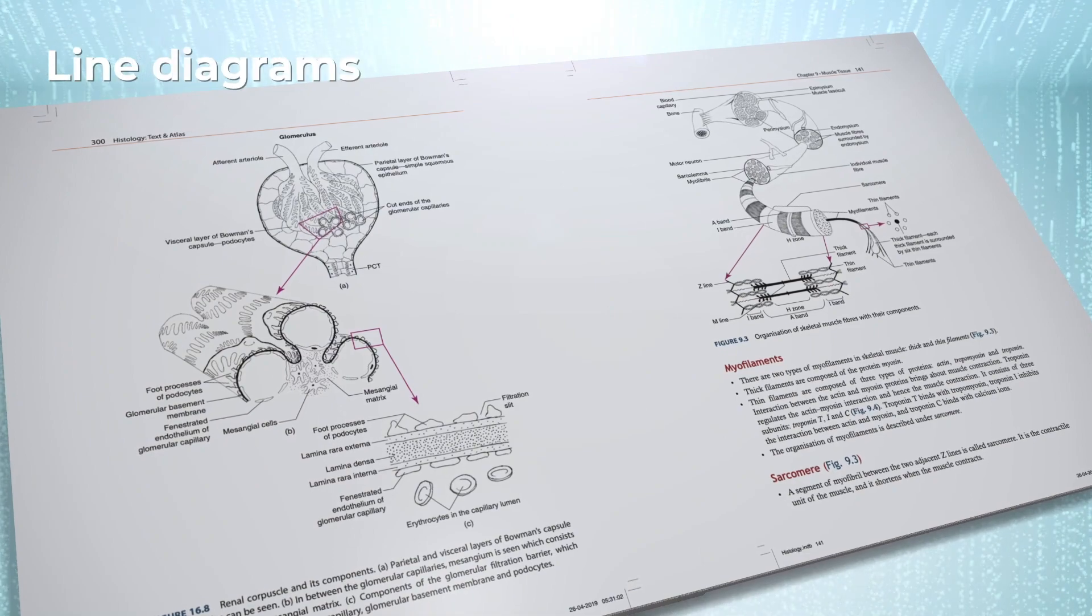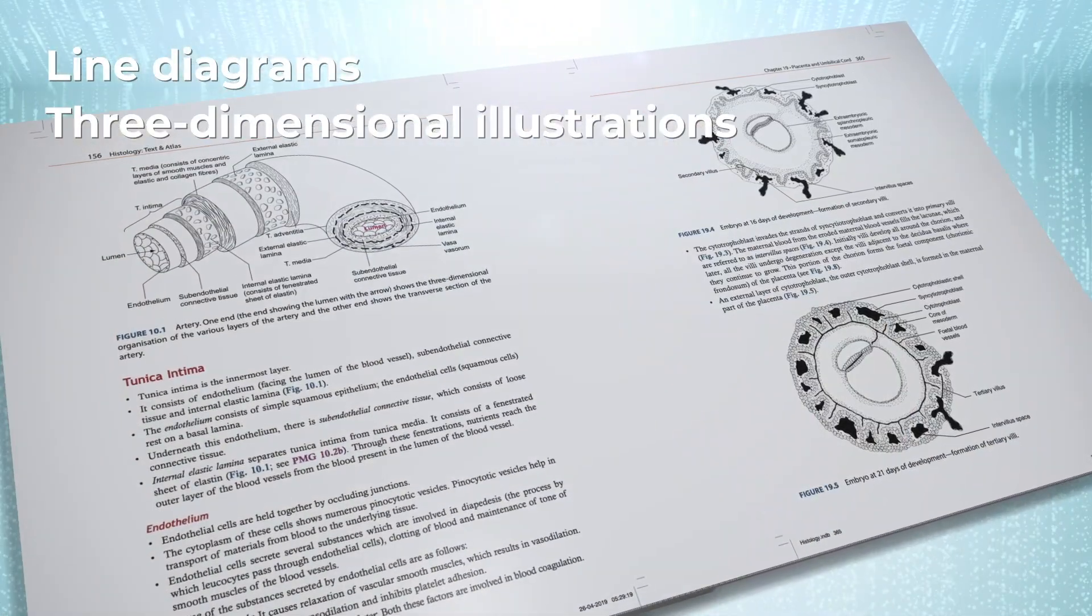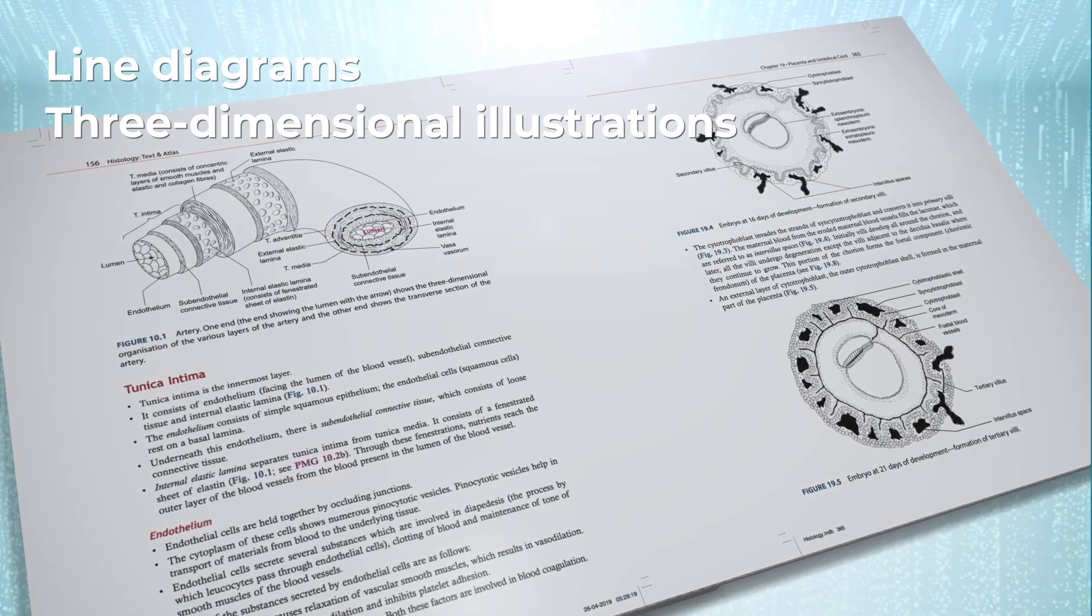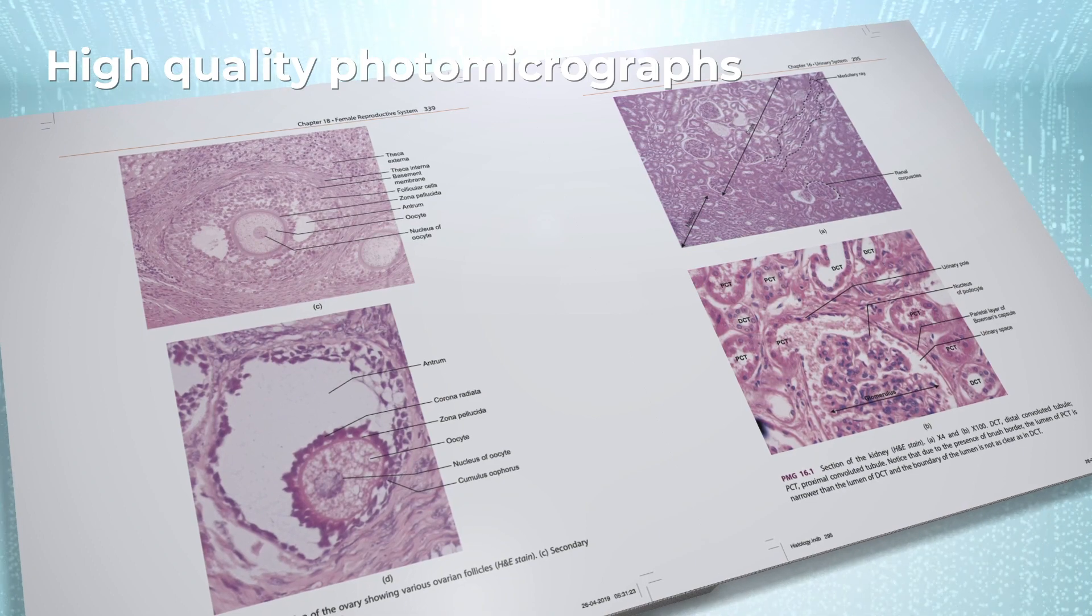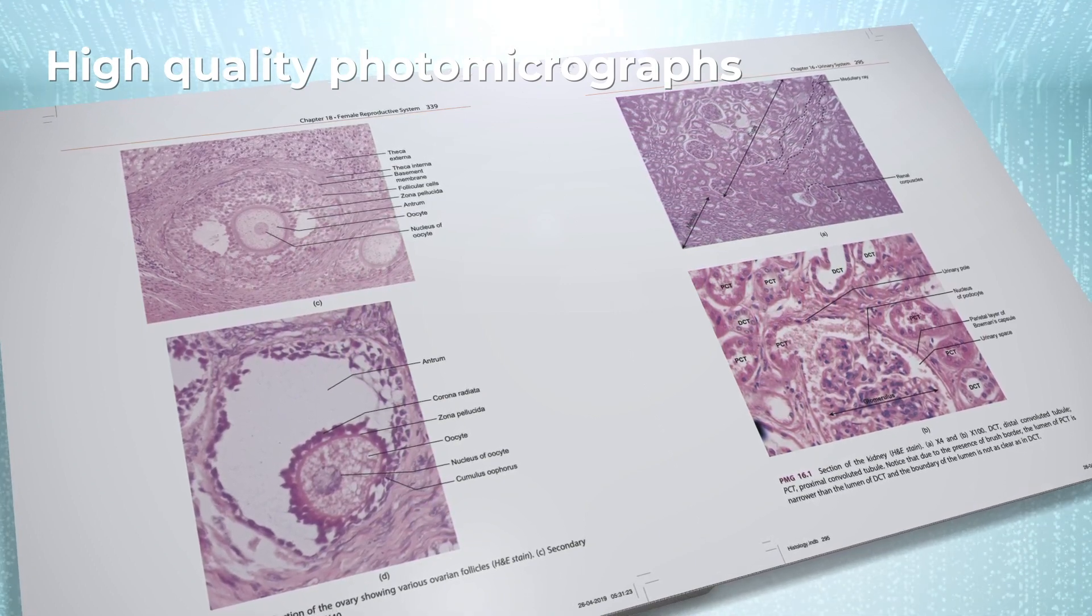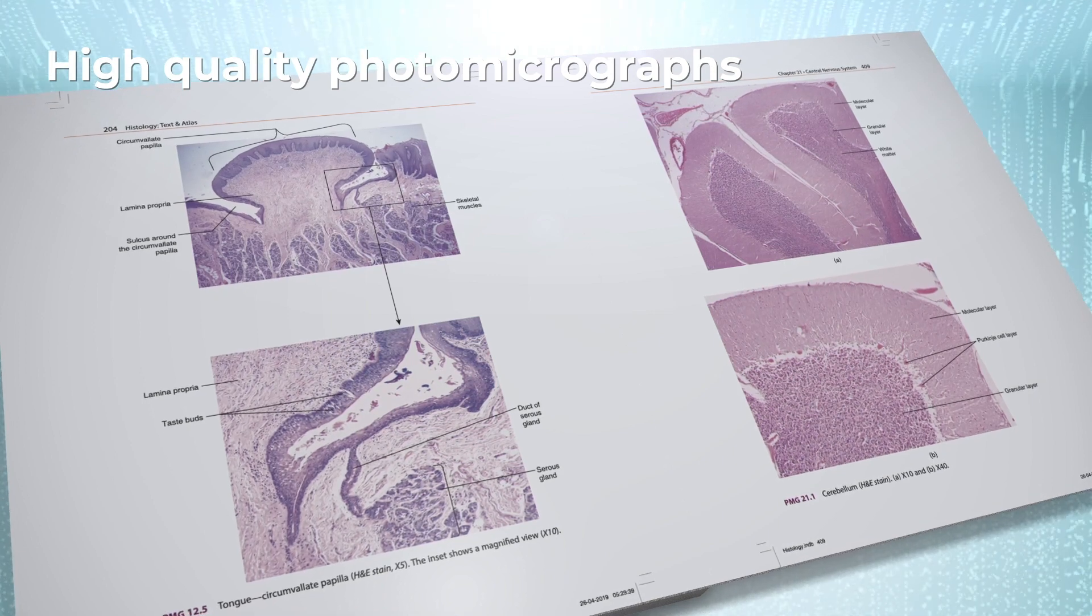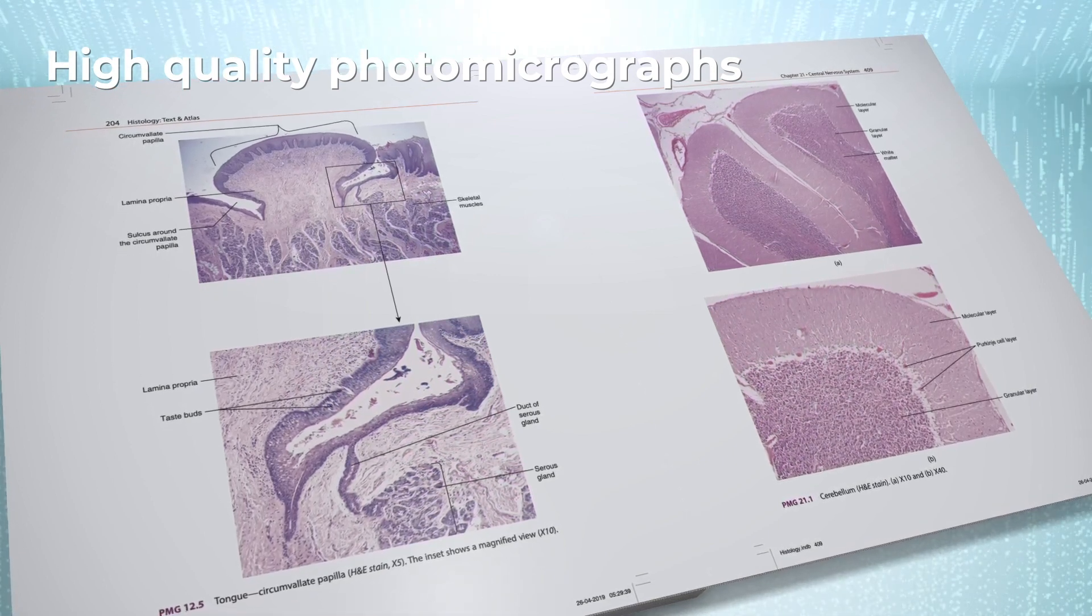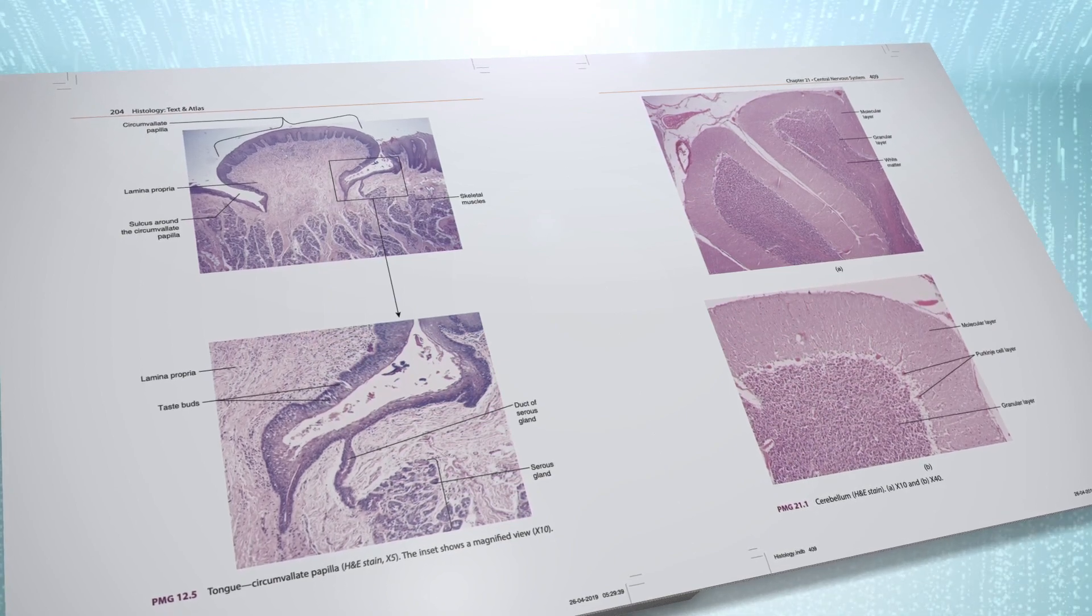Line diagrams and three-dimensional illustrations with detailed labeling further support understanding and retention. High-quality photo micrographs of histological slides in different magnifications, commonly used by students in lab, enable students to understand the overall organization of tissues in an organ, as well as details of a particular structure.